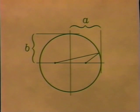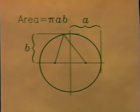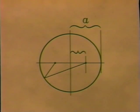The region bounded by the ellipse has area pi AB. The distance from the center to either focus is some fraction of A, EA.